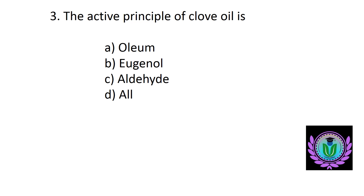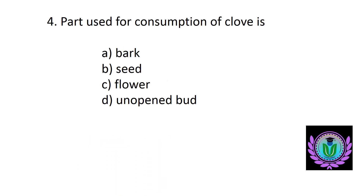The active principle of clove oil is — option A: oleum, B: eugenol, C: aldehyde, D: all of the above. The answer is option B, eugenol.